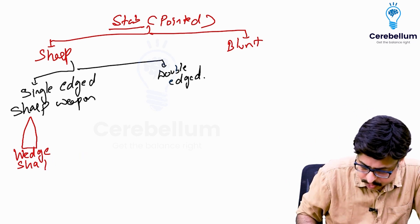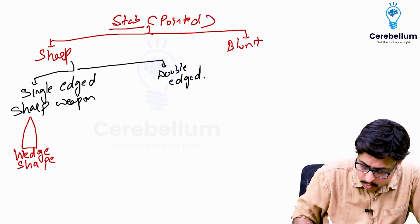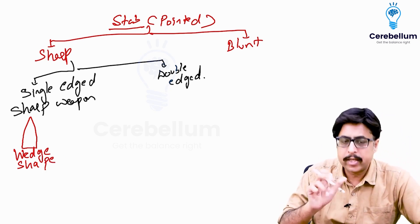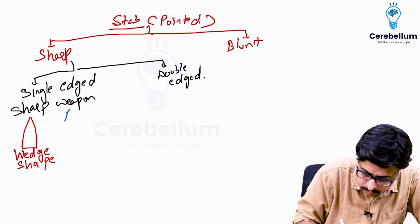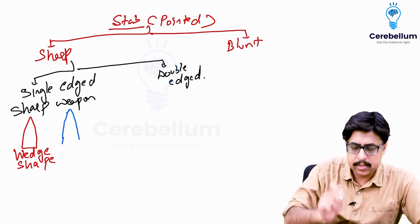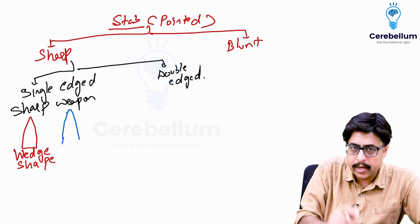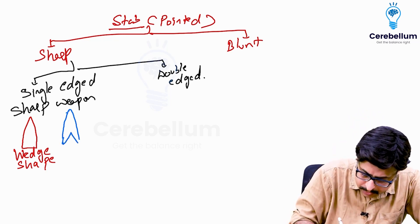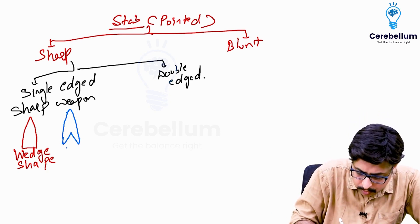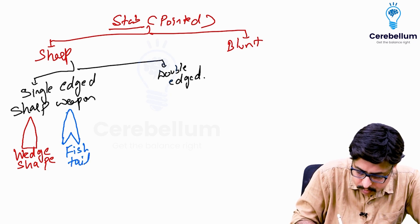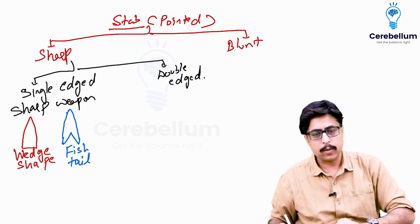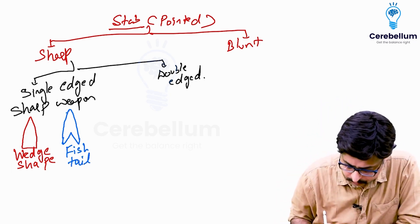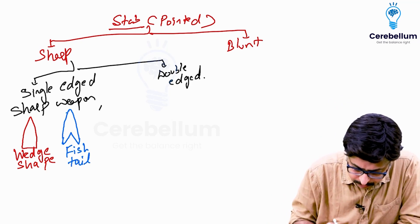Sometimes a variation of this wedge shape occurs. One end remains pointed, but variation occurs in the blunt end. Sometimes this shape appears like a fish tail — it is called fish tail because it appears like the tail of a fish.